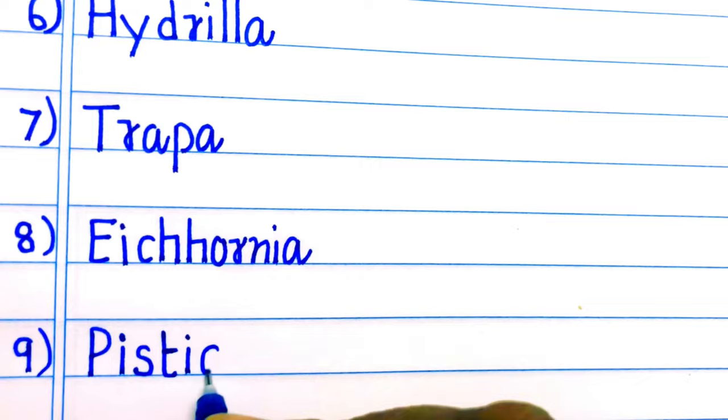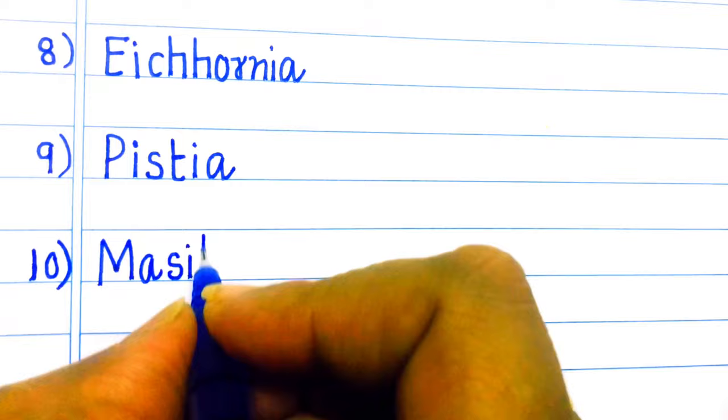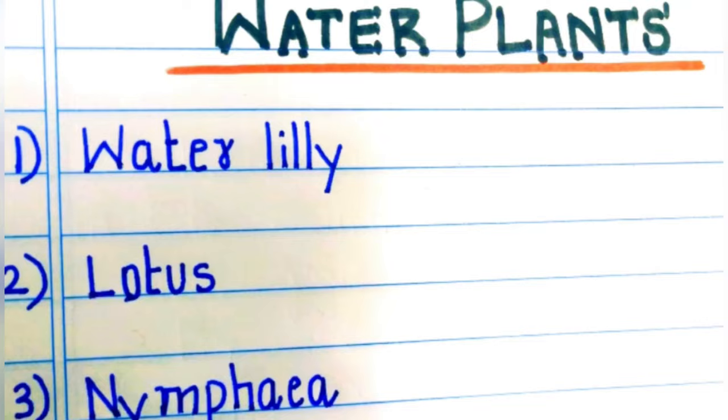P-I-S-T-I-A, Pistia. Tenth one: M-A-R-S-I-L-E-A, Marsilea. I hope you enjoyed writing water plant names with me. Thanks for watching.